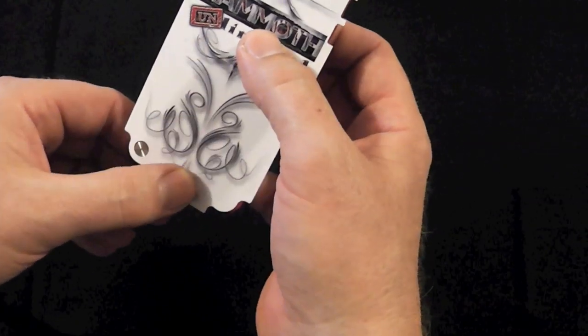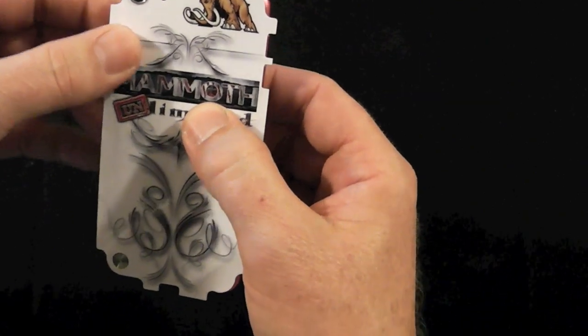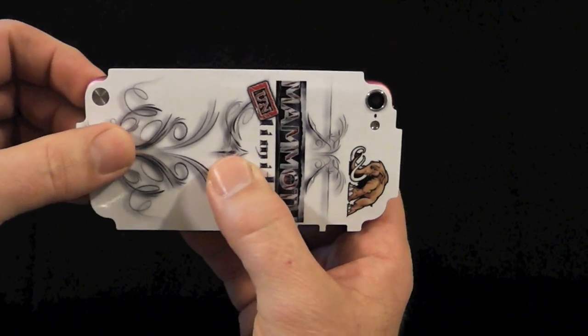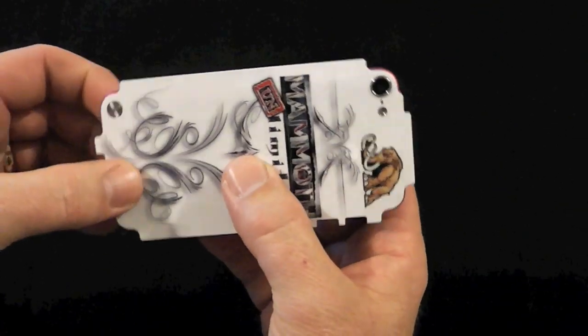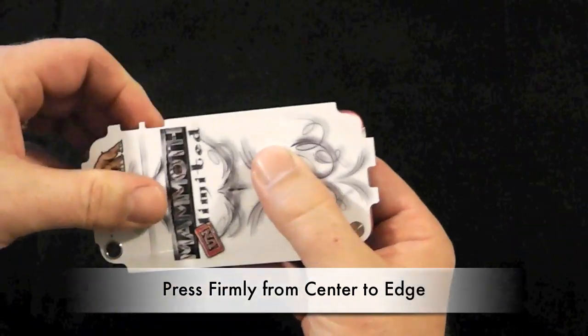Okay, once you get it lined up, you just kind of start from the middle, kind of look at your key points around the camera hole and stuff like that and make sure it's positioned where you want it. And then just start from the middle and work your way out adding pressure.